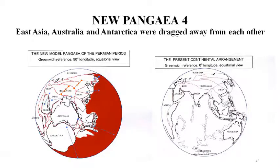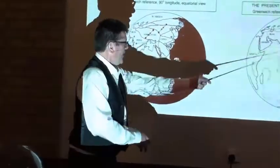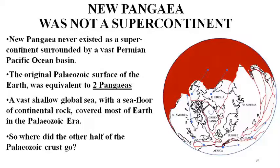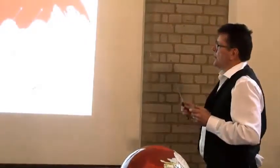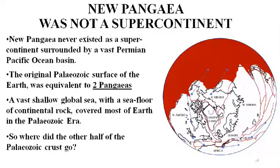Looking at the new Pangaea model, you can see it's a bit like something went bang and spread out from there to reach our present configuration. The big idea is that new Pangaea was not a supercontinent — it was half the old crust of our planet, and the other half is missing. It was never a continent with an ocean basin. What I'm saying is there never was a Permian Pacific Ocean basin. At the time of the Permian period, there was one continuous crust made of continental rock.